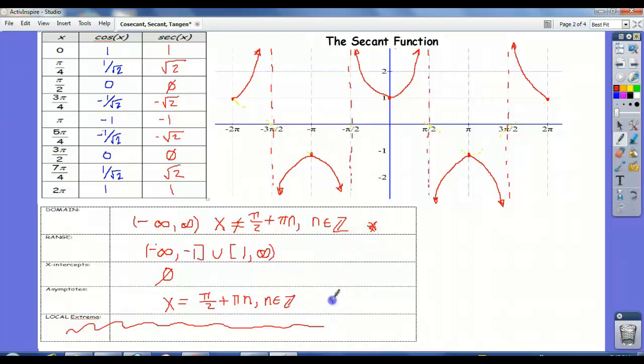And local extrema we're not going to deal with right now. Okay. So again, I think hopefully that was a pretty painless way to grasp the secant function. But pay attention to writing the domain and the asymptotes correctly. That's where a lot of students get confused.